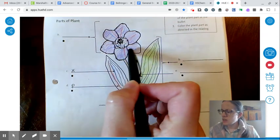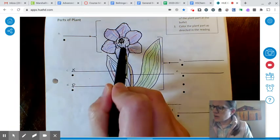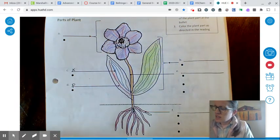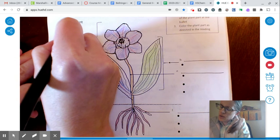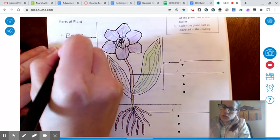We'll start with the flower. This is the flower. You should have colored it purple. I'll talk about why it's got these lines in it later. Here you label flower.